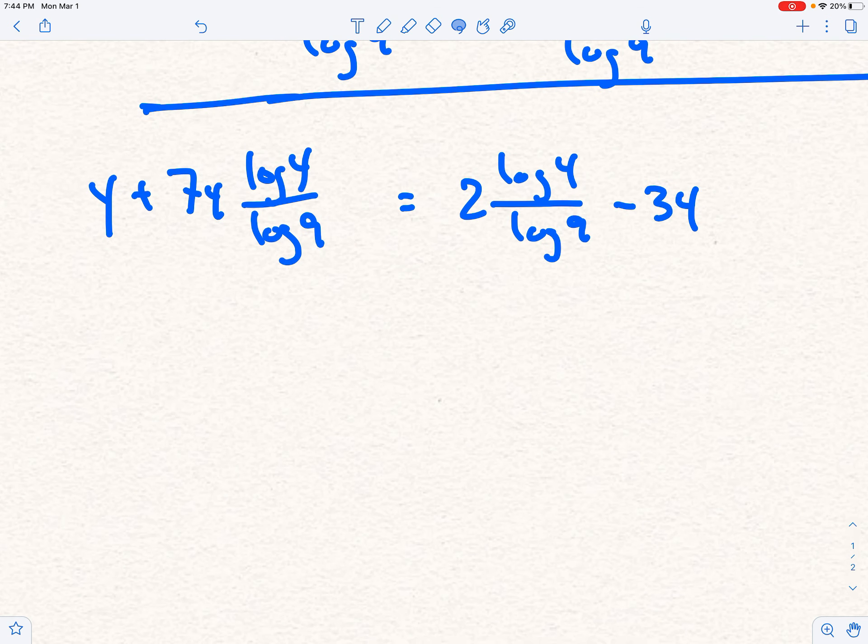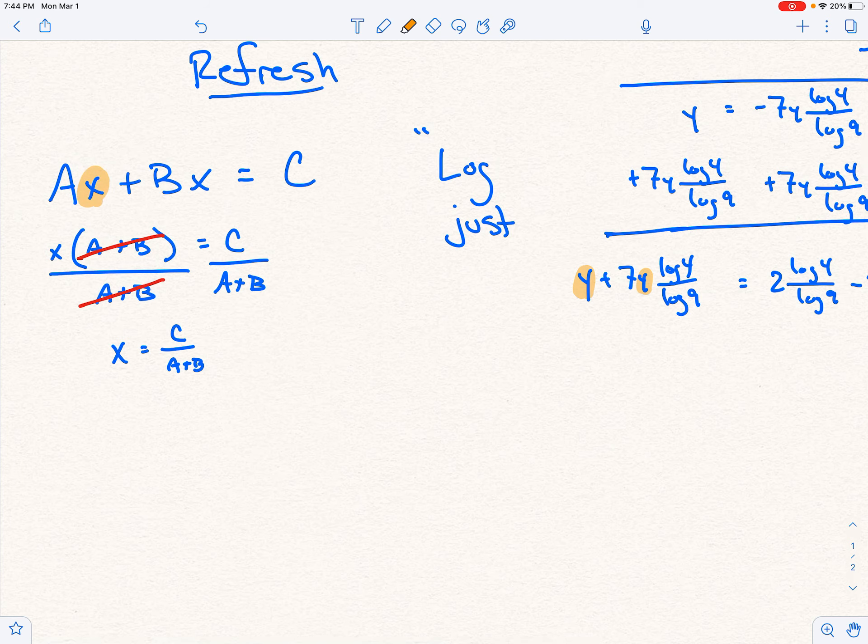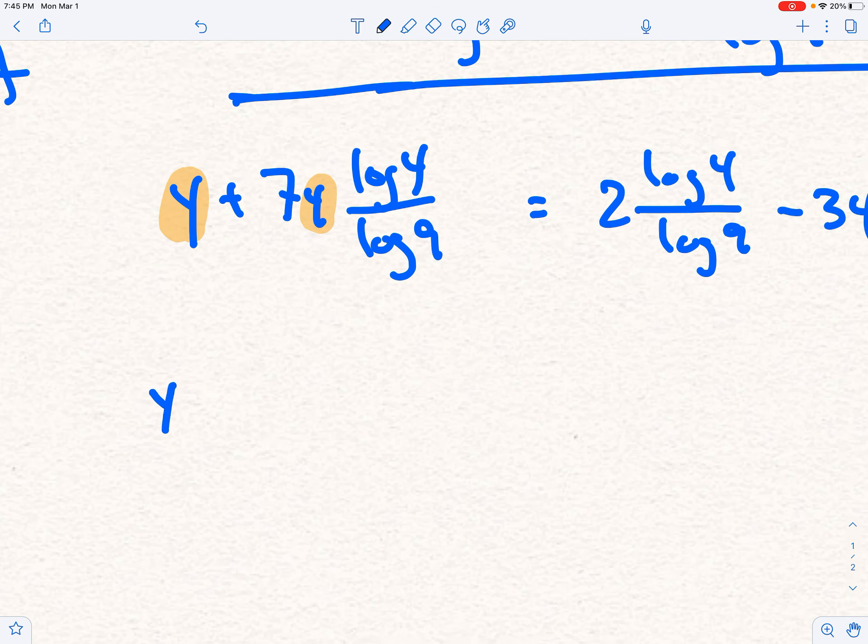Let's do this, right? You see the y and you see the y? That is just like, I'm going to go to the left here, that's just like having the x and the x. So we're going to factor out the y. All right, here we go. So I'm going to factor out the y, and I'm left with 1 plus 7 log 4 over log of 9.